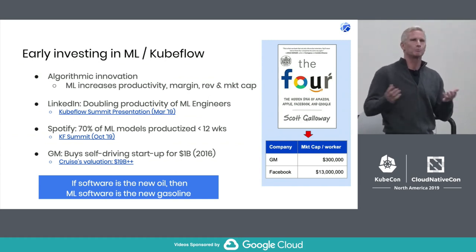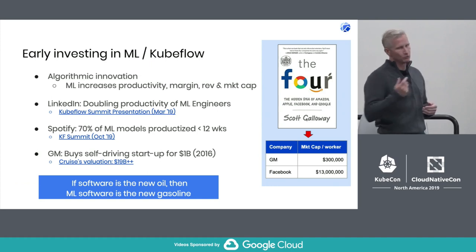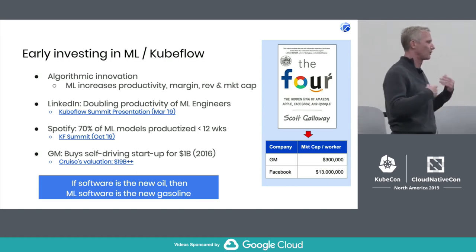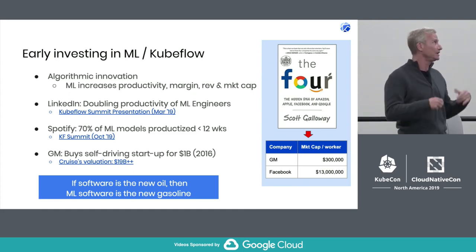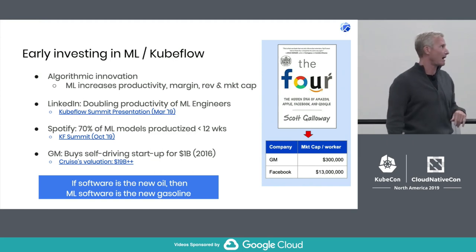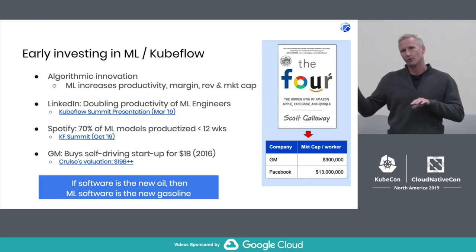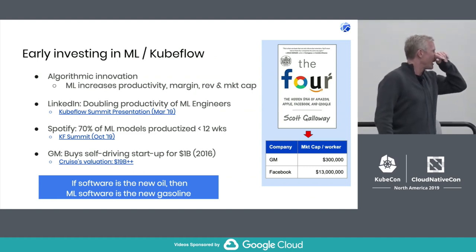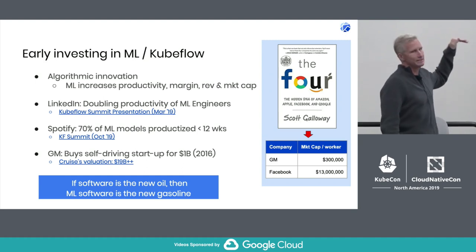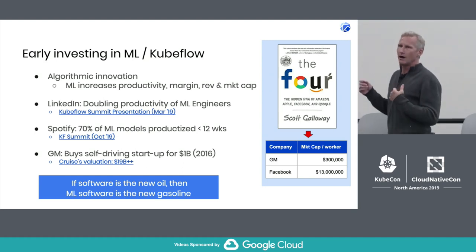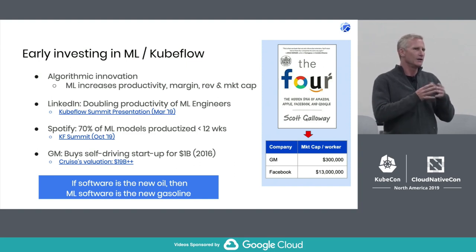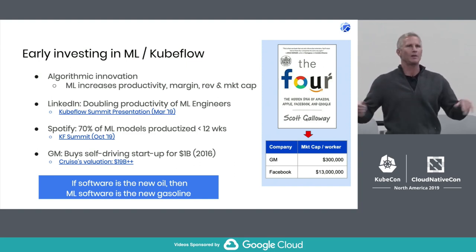You may say, so what? They're in different businesses, but they're both competing for money. When you look at what machine learning is doing — as discussed in "The Four" — the hidden DNA of those four companies is that machine learning increases productivity, margin, revenue, and market cap. If you look at early adopters behind Apple, Facebook, Google, and Amazon, you'll see that LinkedIn came to the community talking about their Kubeflow experience.